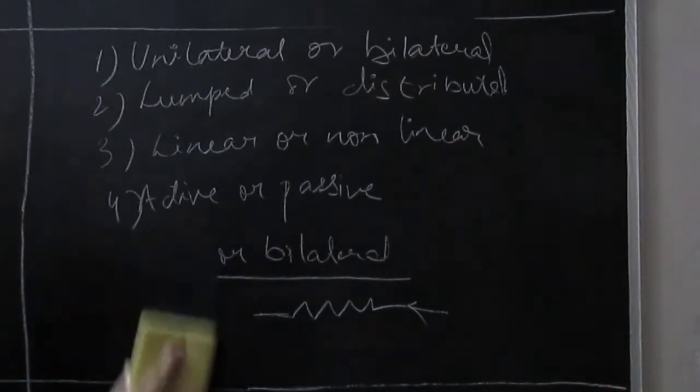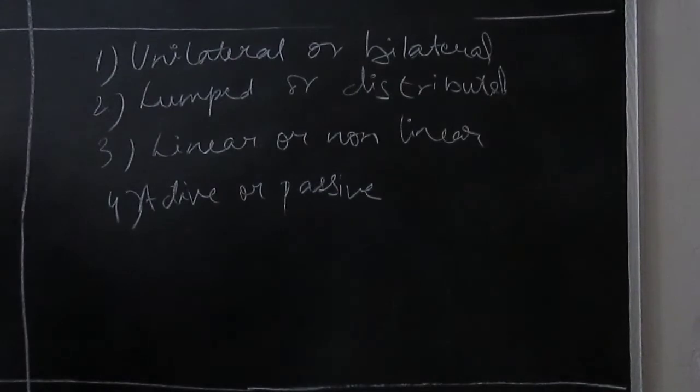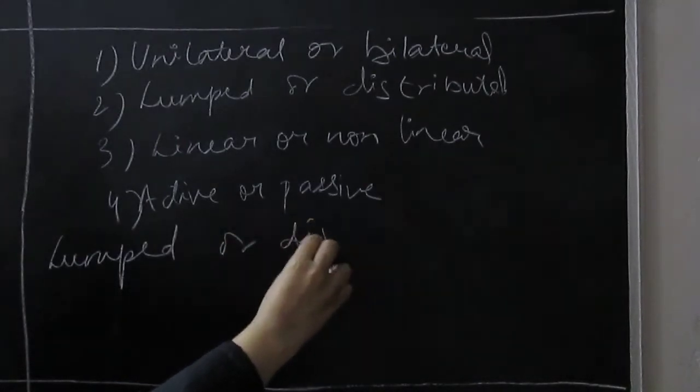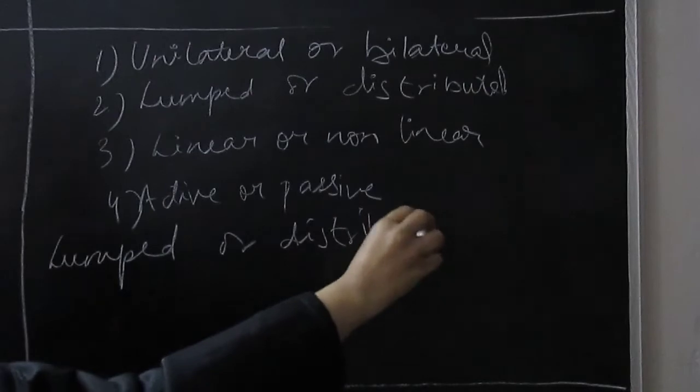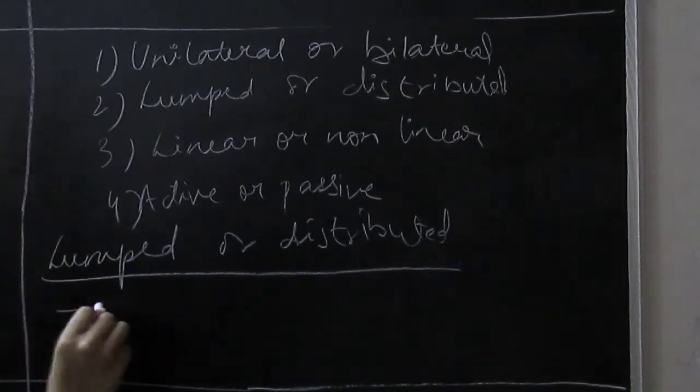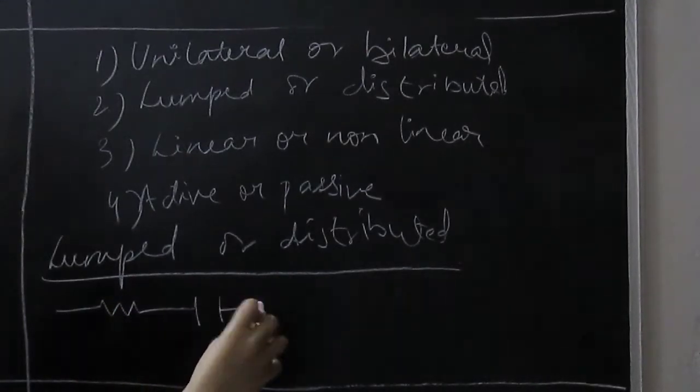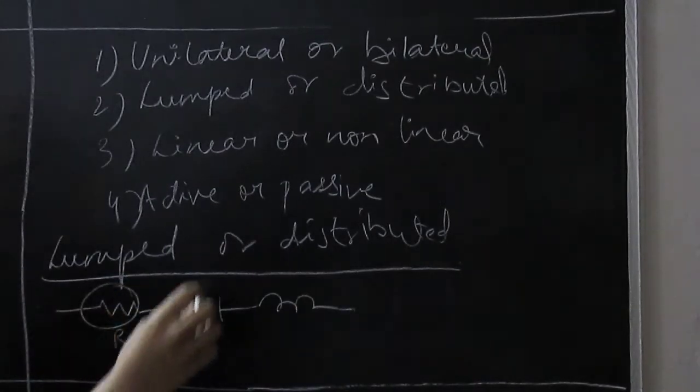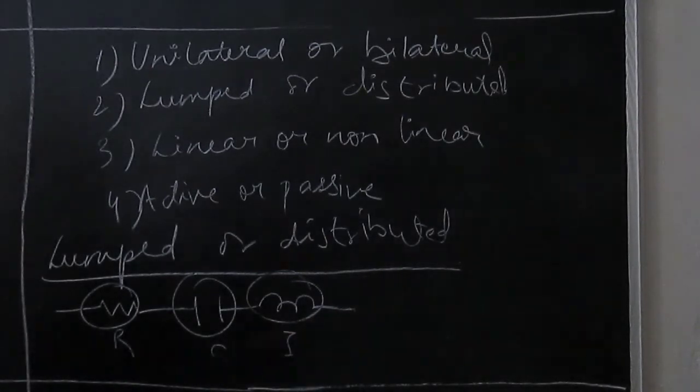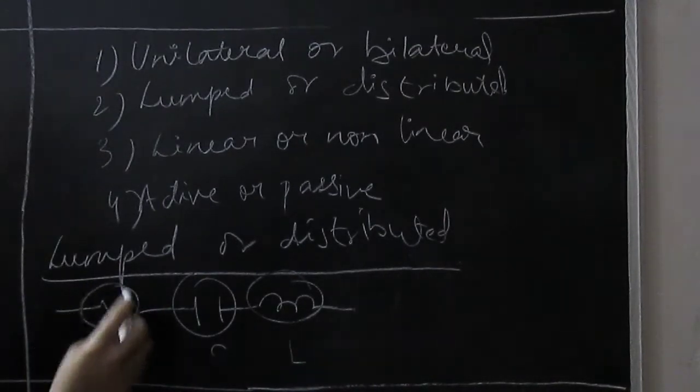Now we have lumped or distributed. The lumped circuit elements are physically separable. If we give a circuit, for example, this circuit we know that this is a resistor, this is our capacitor, and this is our inductor. We know that this is a different unit and this is different.